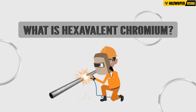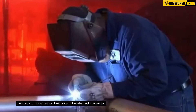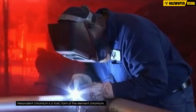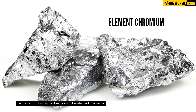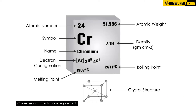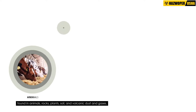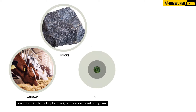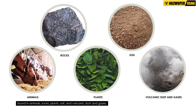What is hexavalent chromium? Hexavalent chromium is a toxic form of the element chromium. Chromium is a naturally occurring element found in animals, rocks, plants, soil, and volcanic dust and gases.